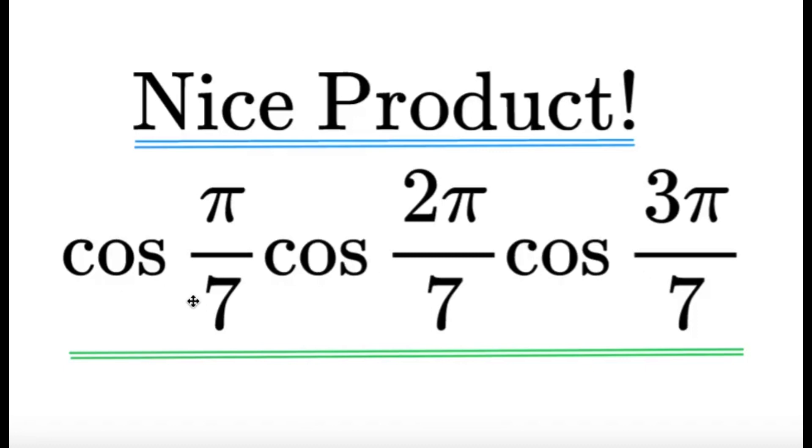Find cosine pi over seven times cosine two pi over seven times cosine three pi over seven. As usual, pause this video if you'd like to give this item a try.